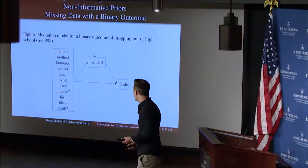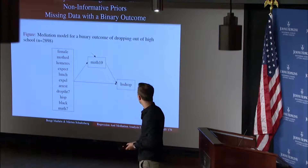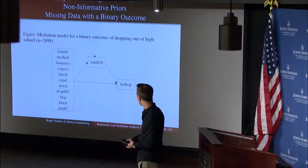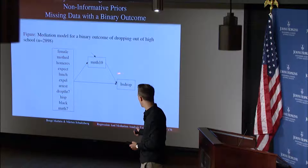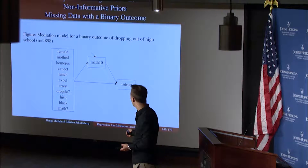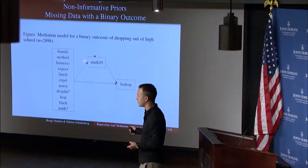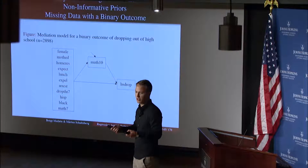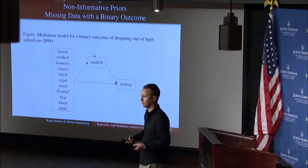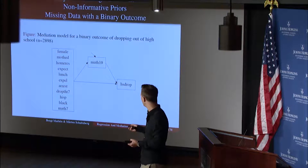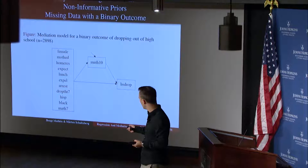We have a mediation model here, and this is the first time we see this example. We have high school dropout as a binary outcome variable — whether you have dropped out of high school or not. The mediator is math10, which is some kind of measurement of how well you can handle complicated courses. We have a lot of covariates, and the exposure we're looking at is math in seventh grade.